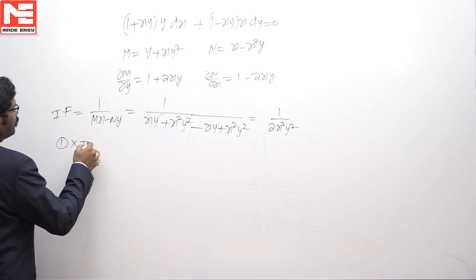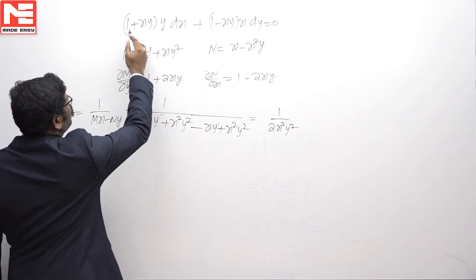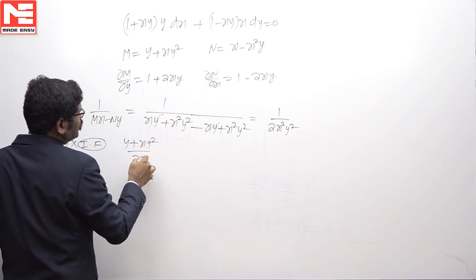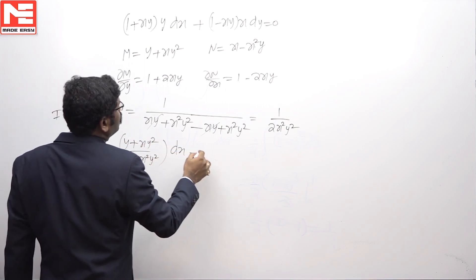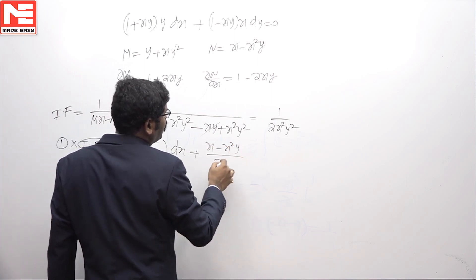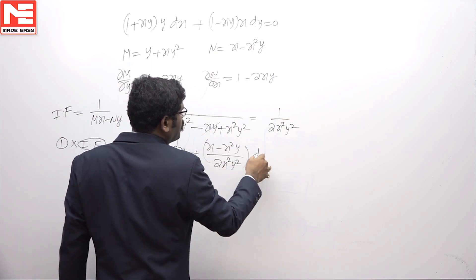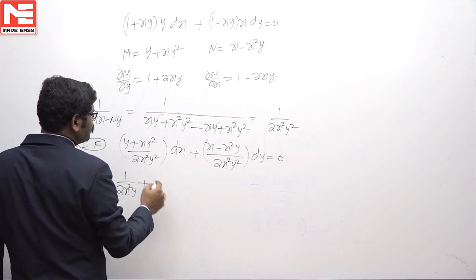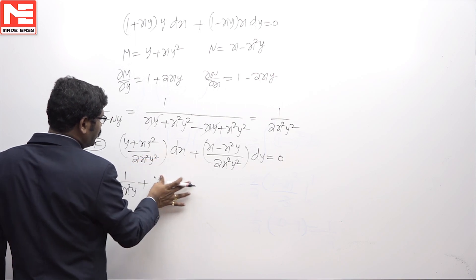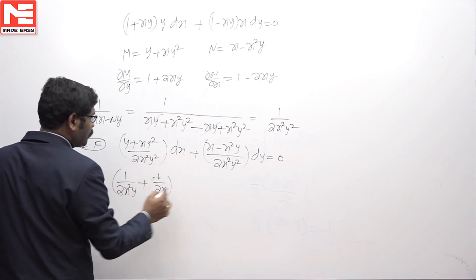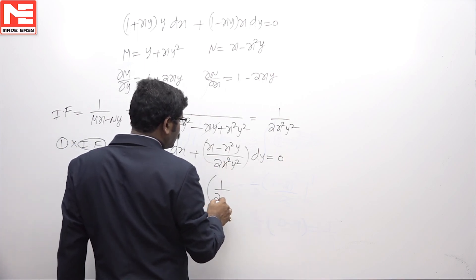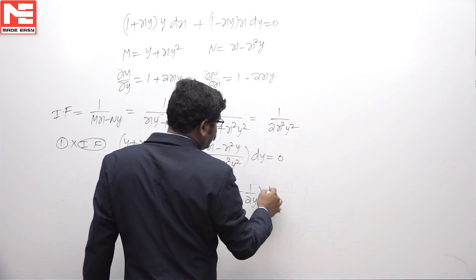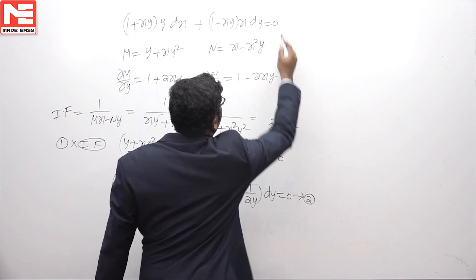Multiplying equation 1 with the integrating factor, we get (1 + xy)·y / (2x²y²) dx + (x - x²y) / (2x²y²) dy = 0. Simplifying: 1/(2x²y) + 1/(2x) dx plus 1/(2xy) - 1/(2y) dy = 0.